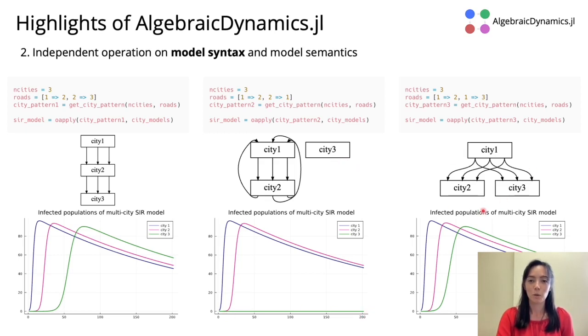In our last example, we see that the infected population of city 3 peaks earlier than in our first example because it's receiving people directly from city 1 instead of mediated by city 2.